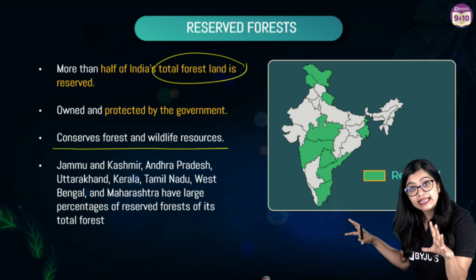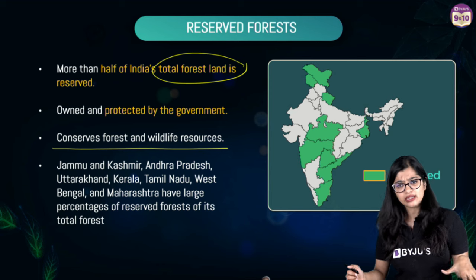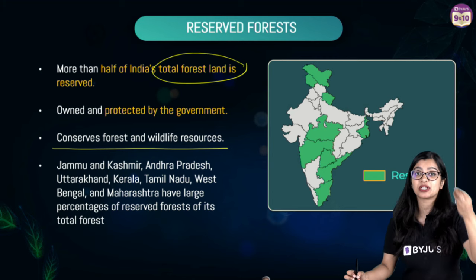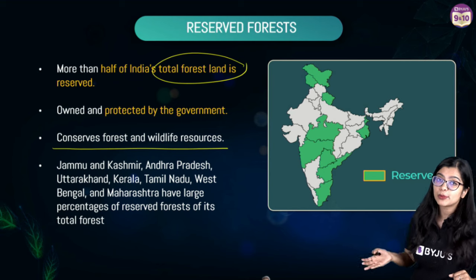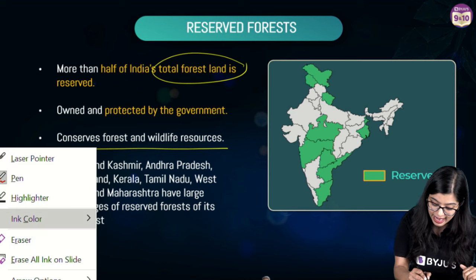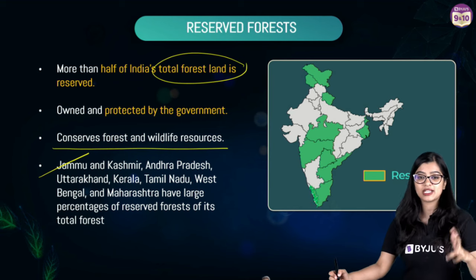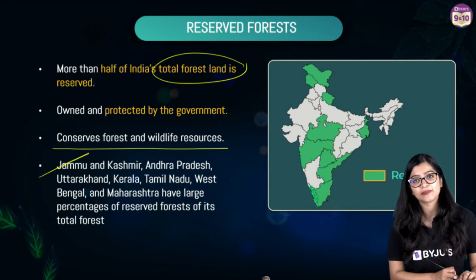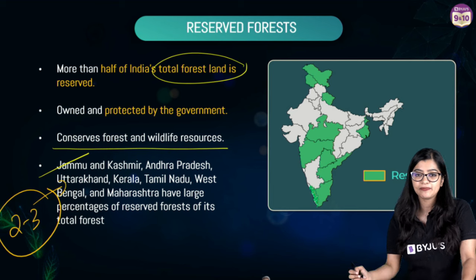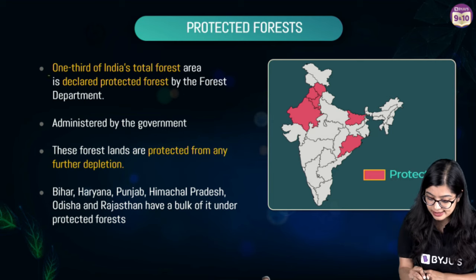Reserve forests take up more than half of India's total forest land. They are owned and protected by the government, with the main intent of conserving forest and wildlife resources. Activities in a reserved forest are limited — local people are not really allowed in the reserved areas and need special permission from a forest officer to enter. Reserve forests are found in regions like Jammu & Kashmir, Andhra Pradesh, Uttarakhand, Kerala, Tamil Nadu, and West Bengal.